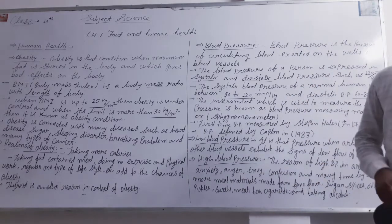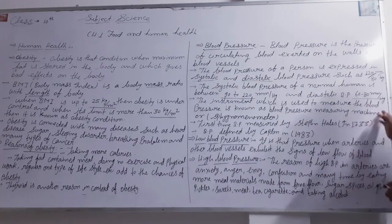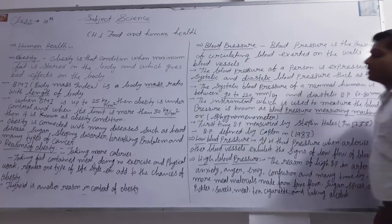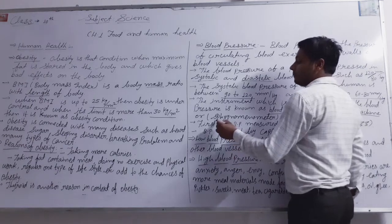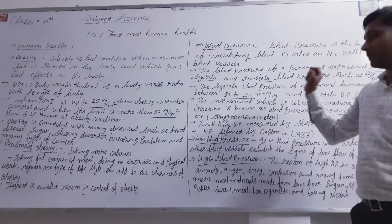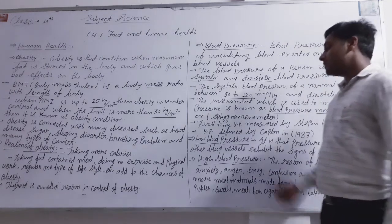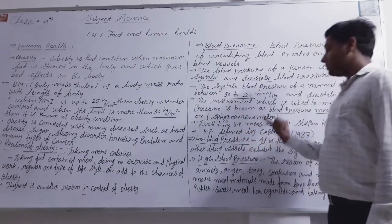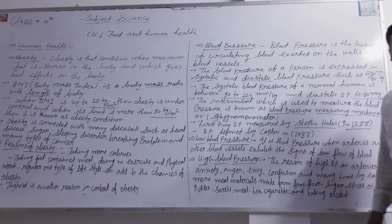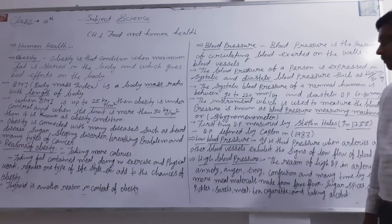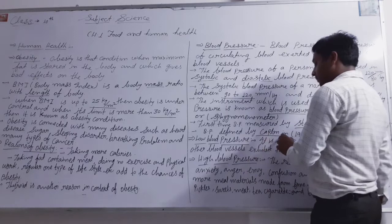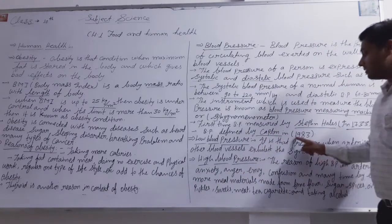Blood pressure is measured by an instrument called a sphygmomanometer. Blood pressure was first measured in 1733, and was defined by Kaplan in 1983.